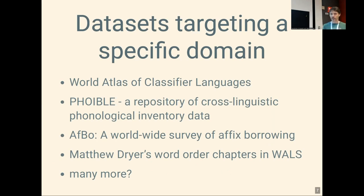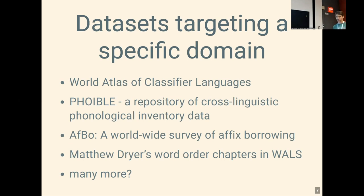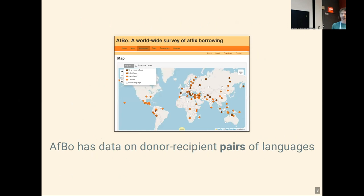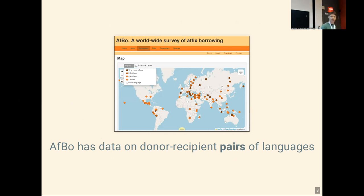Sean already talked about PHOIBLE, which is a repository of cross-linguistic phonological inventory data. One of the earliest datasets I was involved with is Frank Seifert's survey of ethics borrowing, and Matthew Dryer's word order chapters in WALS can be considered global domain-specific datasets. The survey of ethics borrowing is special: it's not about single languages but about donor-recipient pairs of languages, which introduces an interesting new concept in terms of the data model.